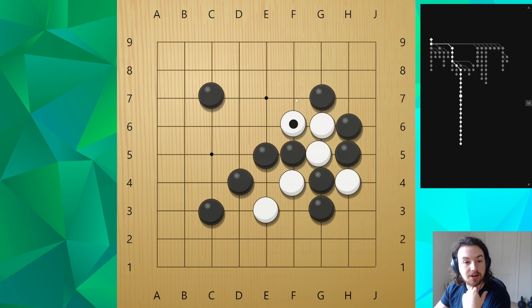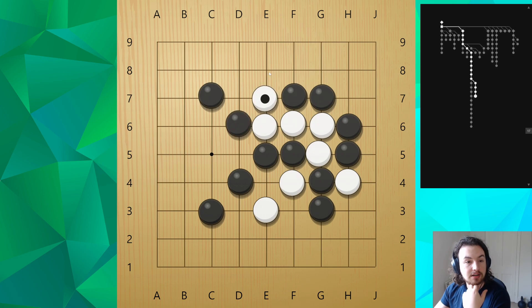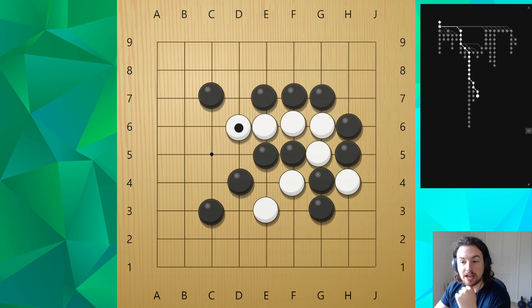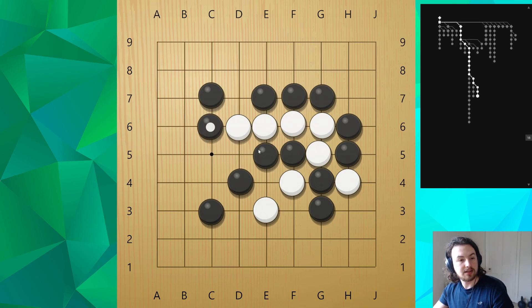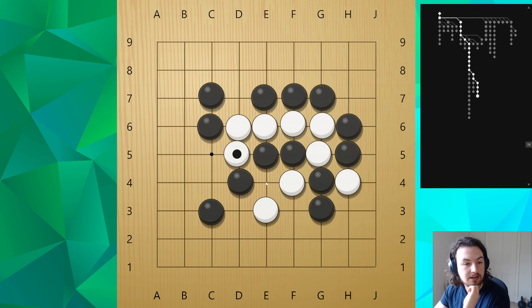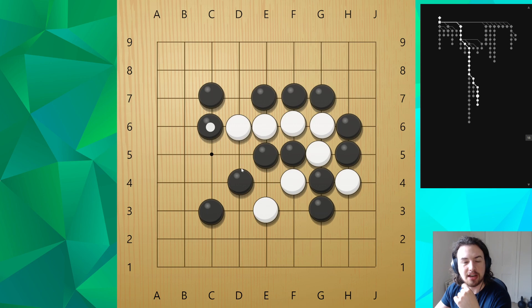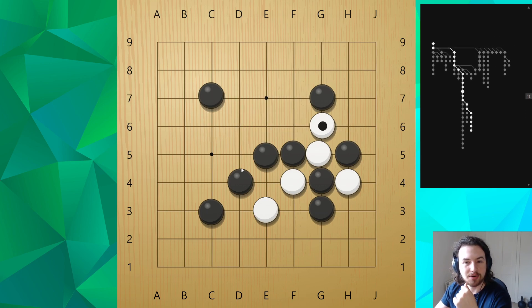There can also be variations in the ladder. If black plays this way, then white escapes, because white now has three liberties. And say black plays here. Then there's Atari here. The game continues. I think it'd still be okay for black, but this is already a little bit more complicated.